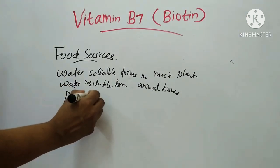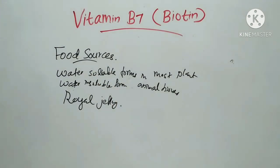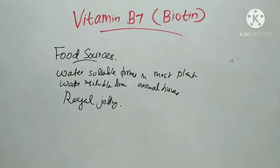Royal jelly is the richest source of Vitamin B7. Human beings cannot synthesize the vitamin, so it must be supplied by the diet. The intestinal bacterial flora can also synthesize the vitamin. So the sources of Vitamin B7 in humans are dietary sources and intestinal bacterial synthesis.